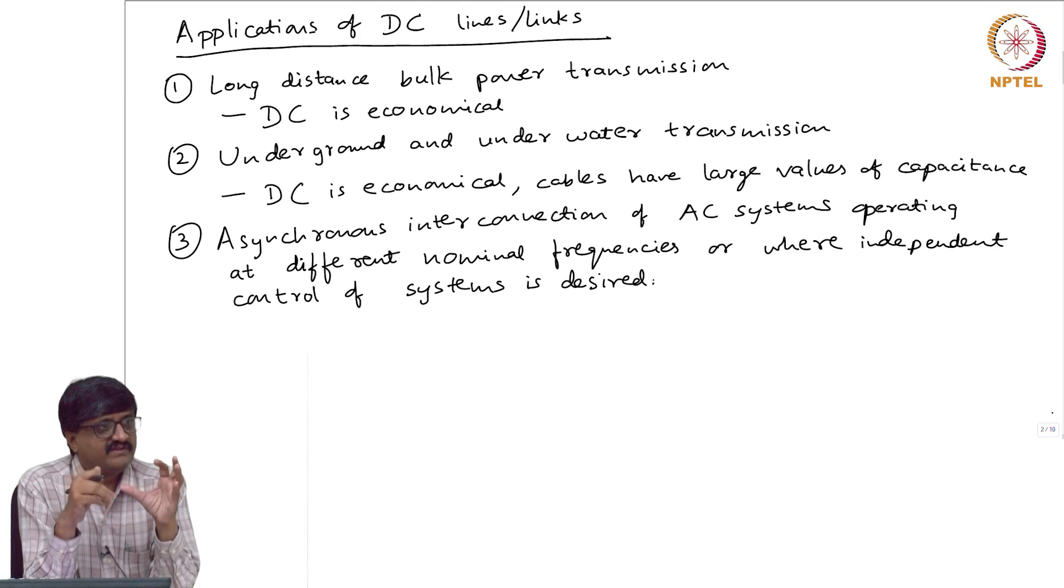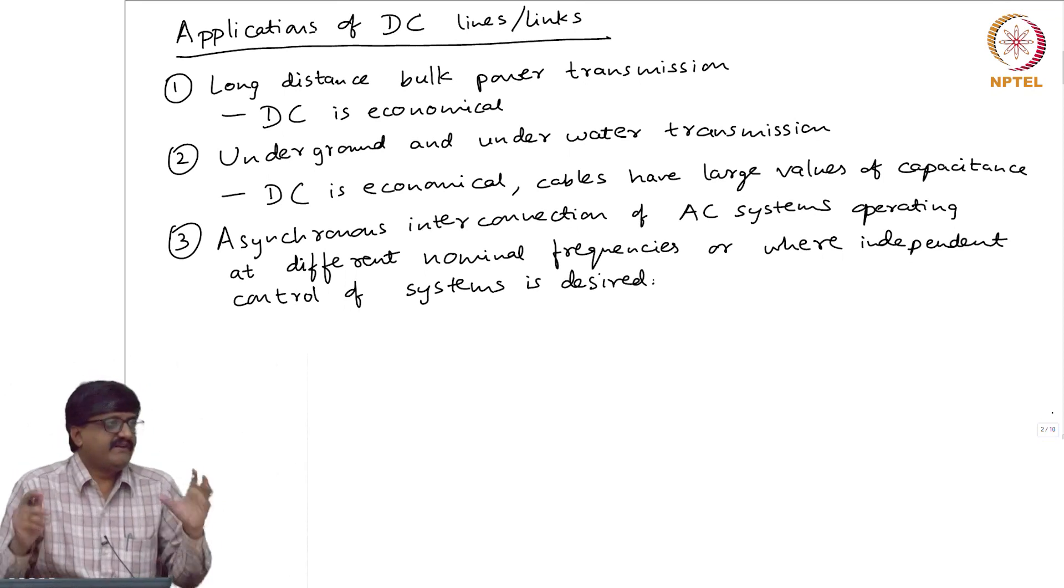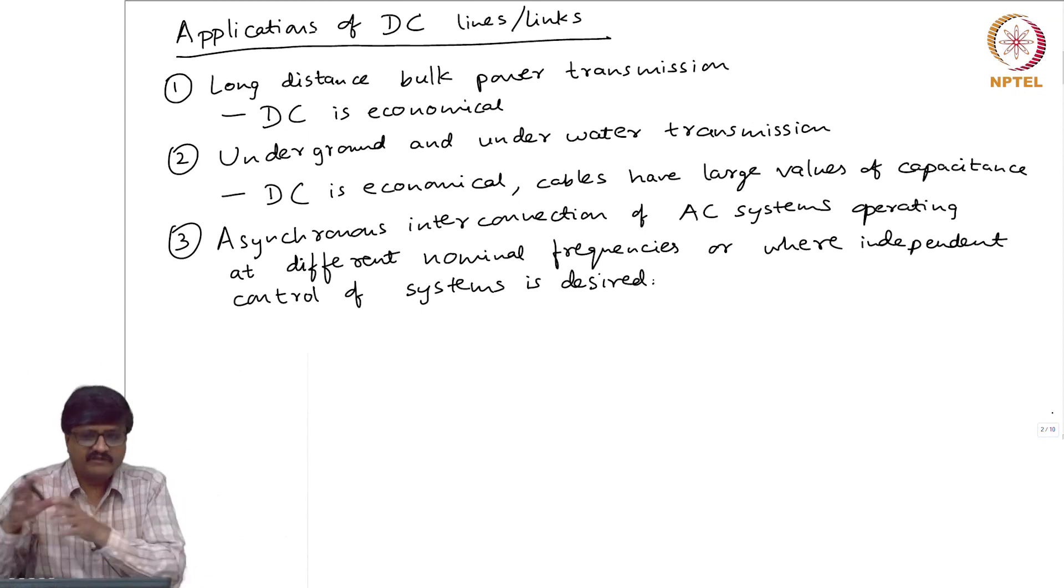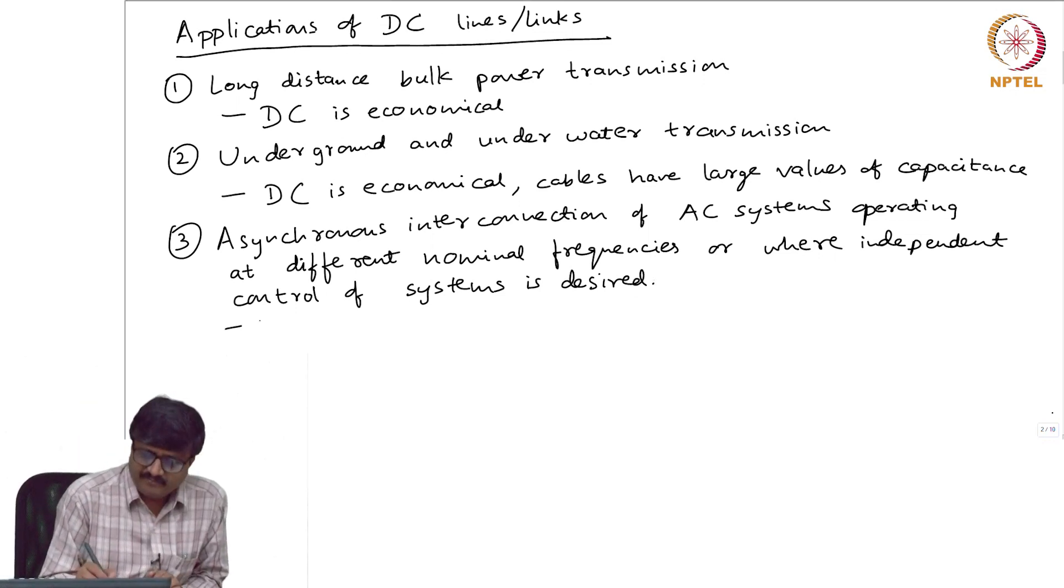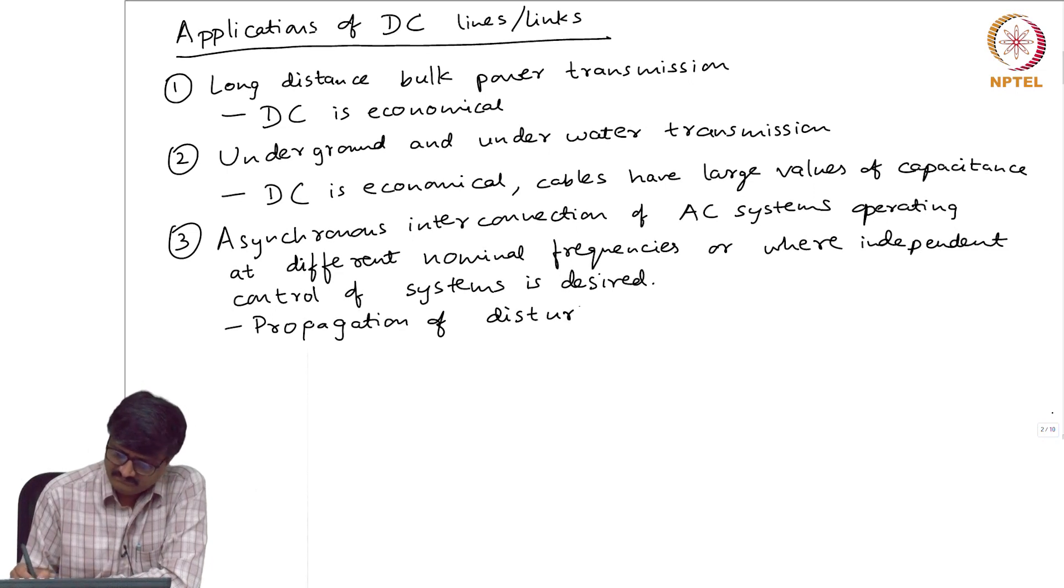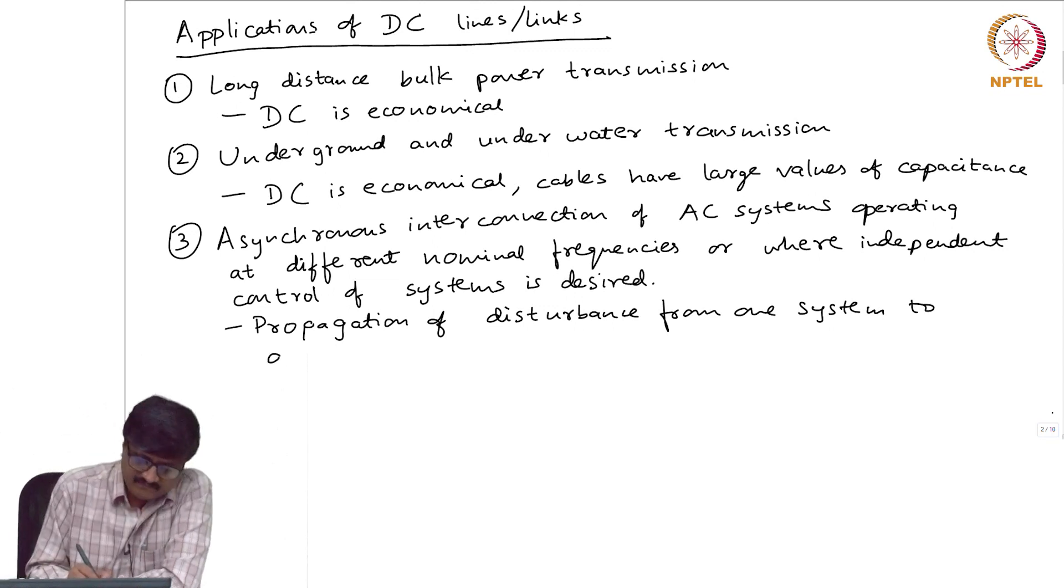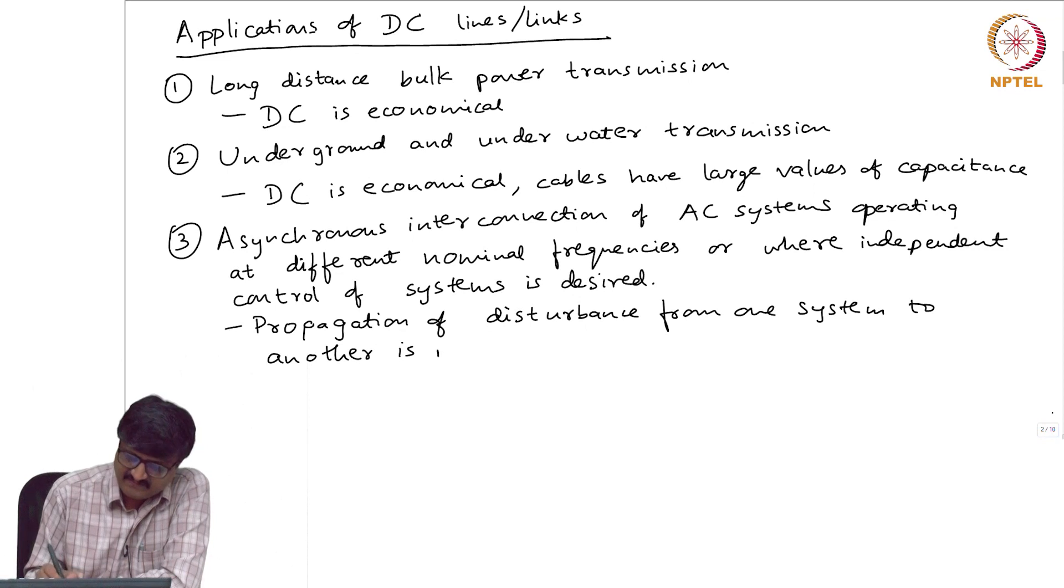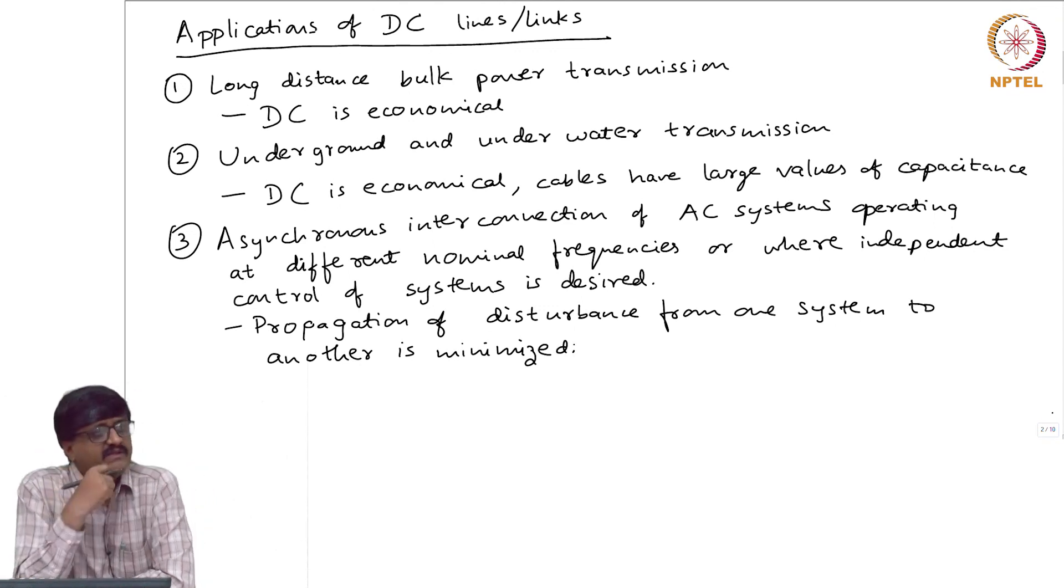Such type of disturbances can easily propagate to the entire system, but in the case of a DC link between two AC systems, a disturbance originated in one system will not actually propagate to the other system though there is an interconnection in the form of a DC link. This has another advantage: propagation of disturbance from one system to another is minimized.